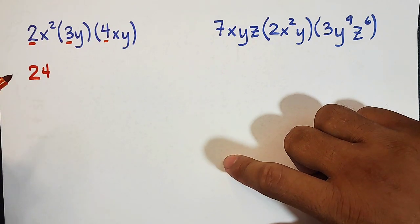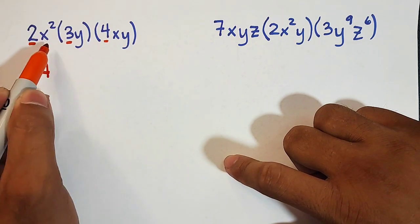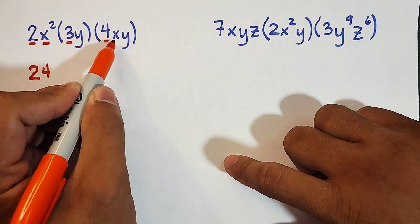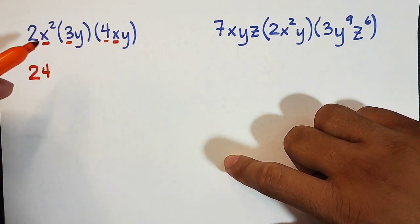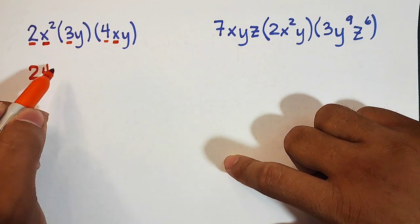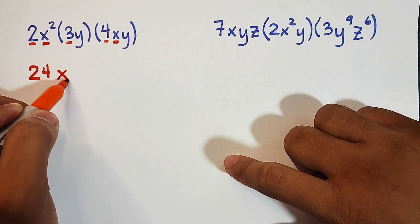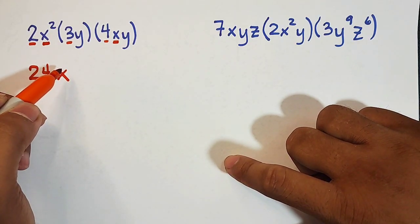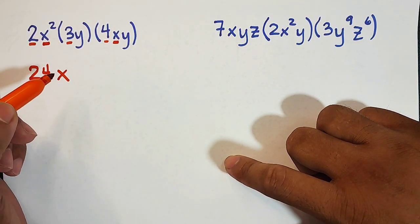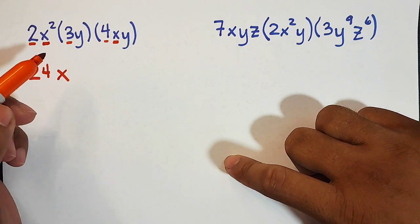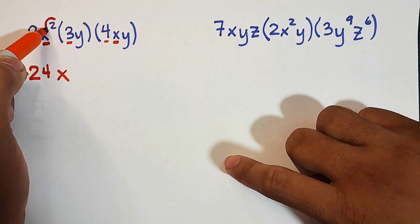And for the variable x and y, we will multiply x squared and x. So as you can see, they have the same variable. We will copy the variable x. And the product rule is that we only need to add the exponents of the same variable. So the first exponent of x is 2.